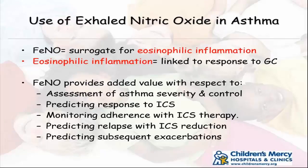ENO is a surrogate marker for eosinophilic or TH2 inflammation, which is linked to response to glucocorticoids. It helps you assess severity, predict response, monitor adherence with ICS therapy, and predict relapse and subsequent exacerbation. Let's take a second case — a 10-year-old female with new onset asthma, C-ACT score of 20 (she says she's good), normal spirometry with no post-bronchodilator change, no allergies, but symptoms of asthma. We do ENO and it's 5. The ENO is normal — the child doesn't have significant inflammation, and probably this is vocal cord dysfunction. We refer for speech therapy and stop fluticasone.